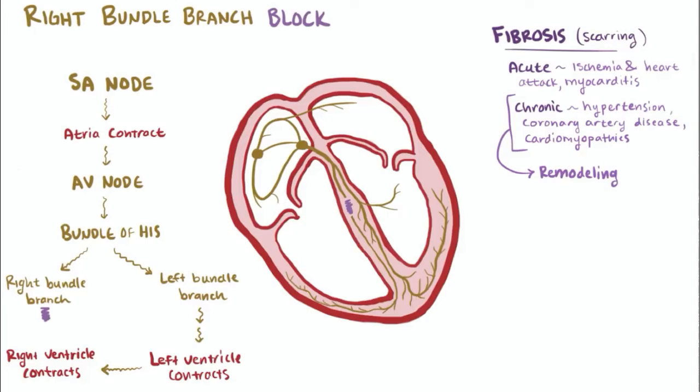If the block happened to be on the left side instead, a left bundle branch block, the signal would be delayed on that side, and so the right ventricle would contract first, and then the left ventricle would contract late.